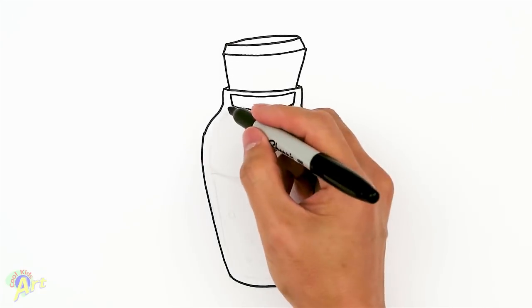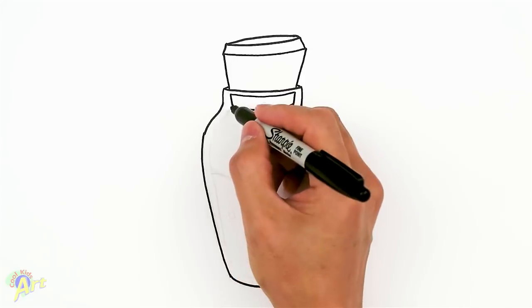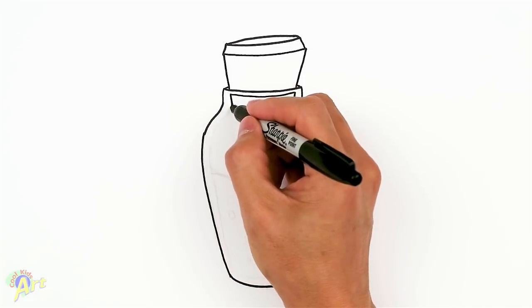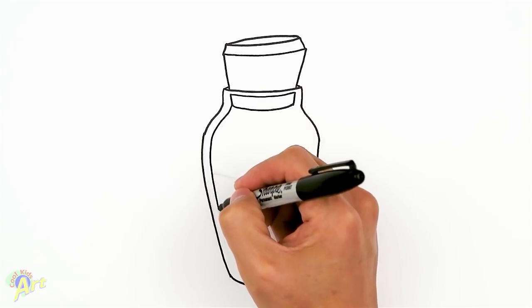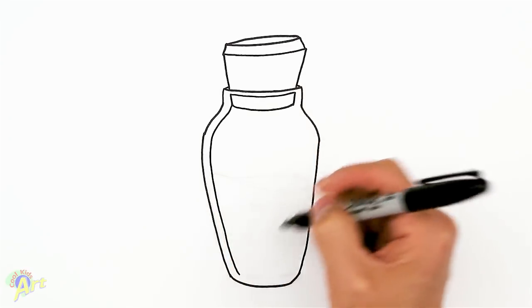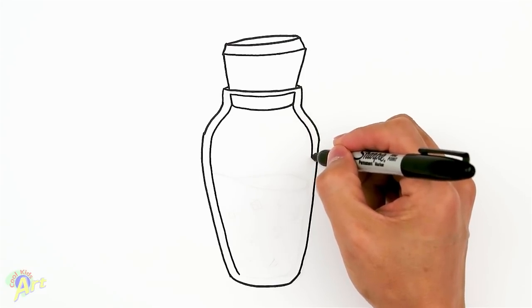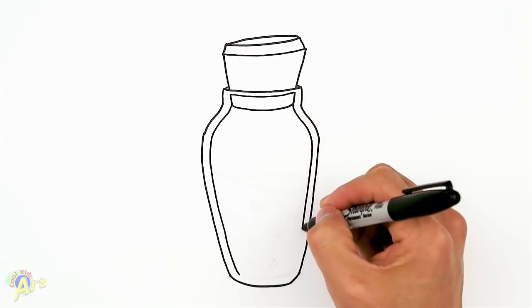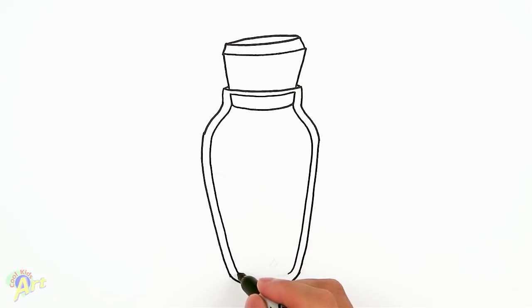And then for the bottle itself, the thickness to it. This one's easier, so we just kind of start from the cork here and give this whole thing some thickness. We're just following along the lines. And then close it off.